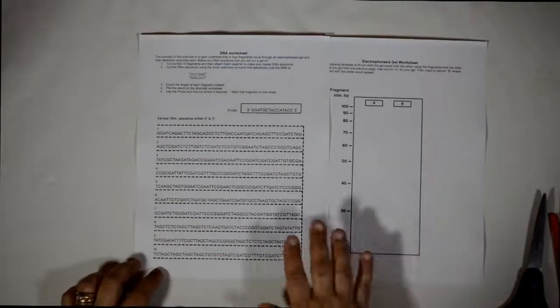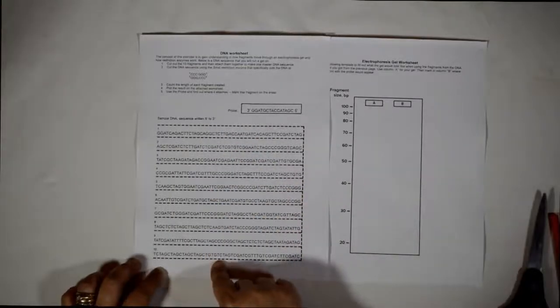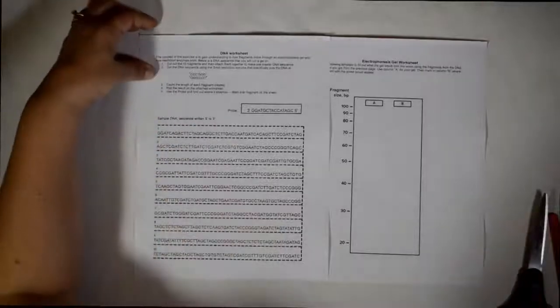So first of all, you're going to cut out the 10 fragments and then you're going to attach them together to make one master DNA sequence.